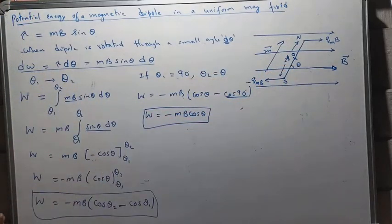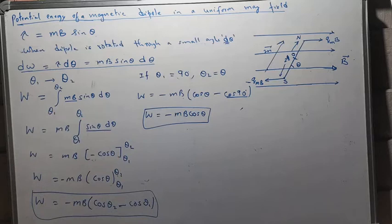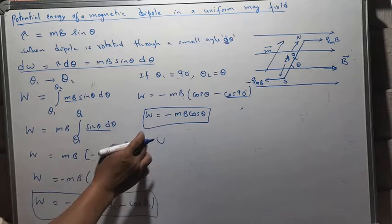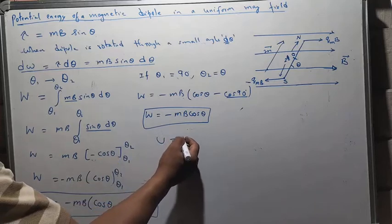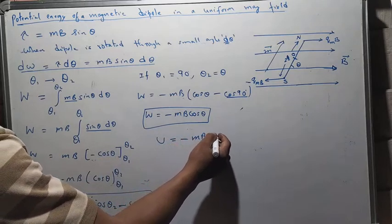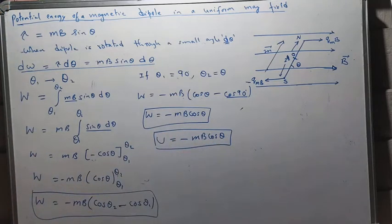This work done in rotating the dipole is stored in the dipole as potential energy. Therefore, the potential energy of the dipole is U = -mb cosθ. This is the potential energy of a magnetic dipole when placed in a uniform magnetic field.